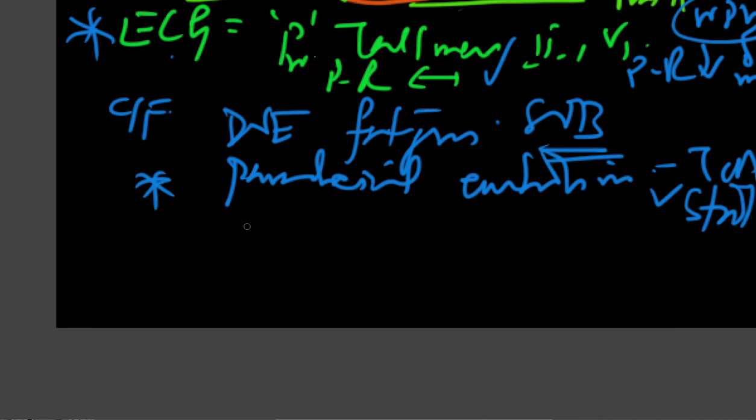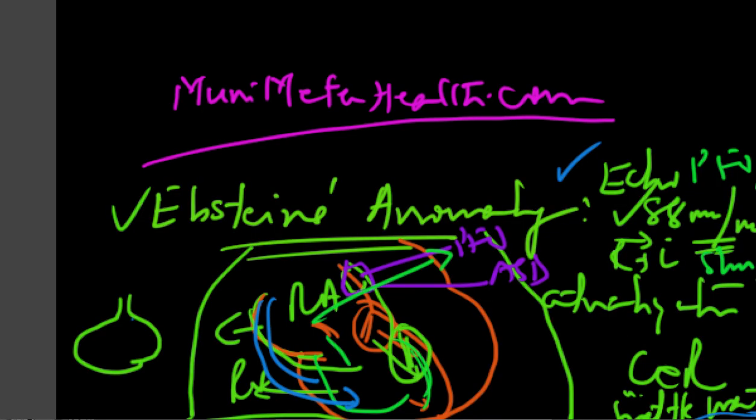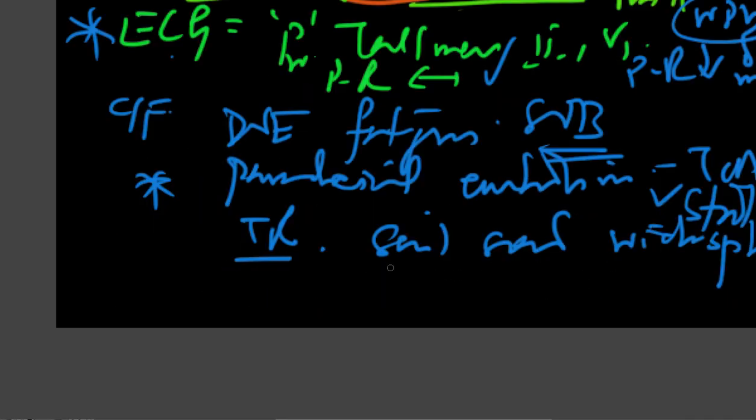Clinically you're gonna hear the TR murmur will be present and the first sound will have a sail sound. The first sound is wide and split. The second sound is also wide and split because there might be a right bundle present. The tricuspid regurgitation is the commonest that one sees and the treatment plan is obviously surgical repair, mostly management of heart failure.